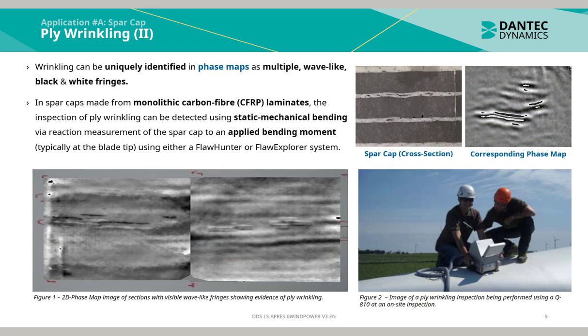Ply wrinkling can be uniquely identified in phase maps as multiple wave-like black and white fringes, shown in the top right-hand corner. In spar caps made from monolithic carbon fibre laminates, the inspection of ply wrinkling can be detected using static mechanical bending via reaction measurement of the spar cap to an applied bending moment, typically at the blade tip using either a floor hunter or floor explorer system.